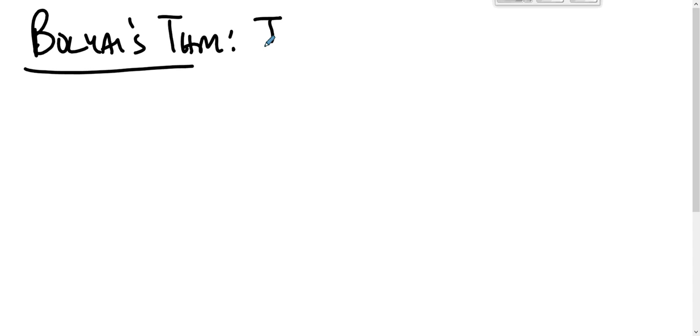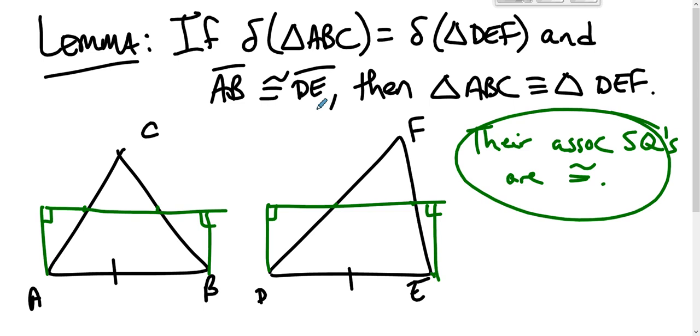Bolyai's theorem says if the defect of triangle ABC equals the defect of triangle DEF, then triangle ABC is scissors congruent to triangle DEF. Now that's a big jump because—see, in the lemma, in the lemma this has to happen